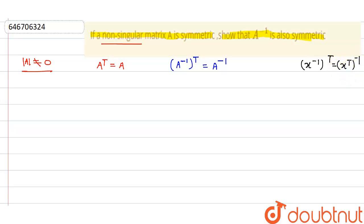Now I'm going to use this property here, so I can write this A transpose inverse is equal to A to the power minus one. Now since we know that A transpose is A, so I'm going to write A transpose inverse...